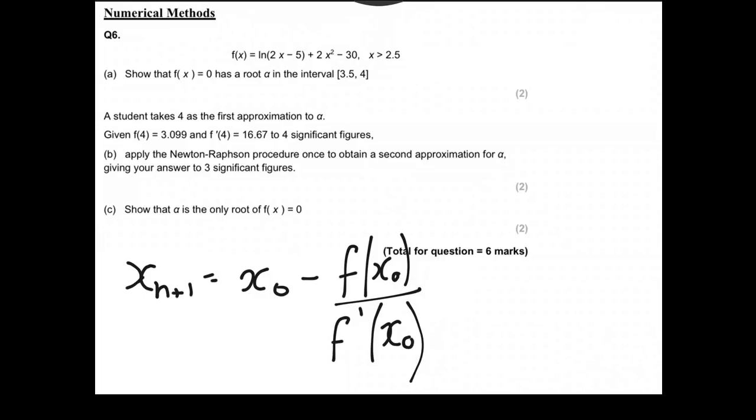We're told that our first x value, we want to try and find our second approximation. So x_1, which would be confusing, but whatever, call x_1 because in Newton-Raphson let's say it's x_0. So the first approximation is x value 4 minus the function of the x value 4, which is going to be 3.099.